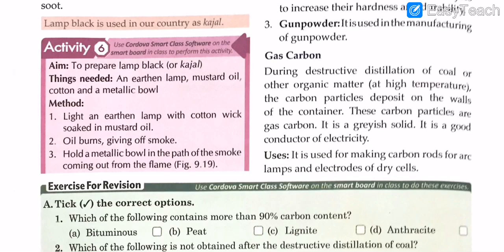Gas carbon: during the destructive distillation of coal or other organic matter at high temperature, carbon particles deposit on the walls of the container. These are called gas carbon. It is a grayish solid and a good conductor of electricity. It is used for making carbon rods for arc lamps and electrodes for dry cells.